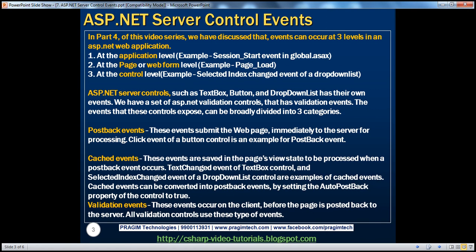In part 4 of this video series, we discussed that events can occur at three levels in an ASP.NET web application. Events can occur at the application level — examples include session start, session end, etc. — and application level events reside in the global.asax file. Events can also occur at the page level, with examples like page load, page pre-render, page unload, etc. And finally, events can also occur at the control level.